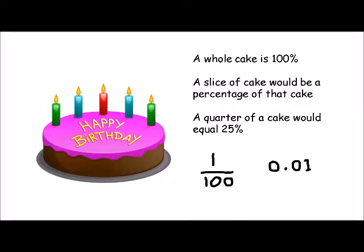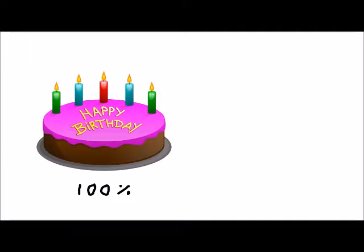We can imagine a percentage as a special kind of fraction where the denominator is always 100. So one over a hundred is 1%. A fraction can also be represented as a decimal — 0.01 — where the 1 is in the hundredths column.